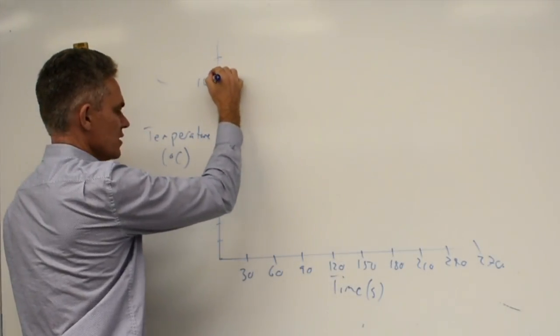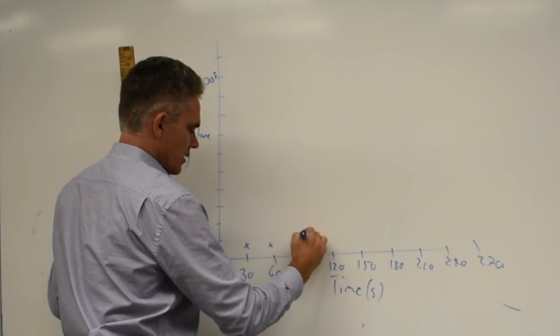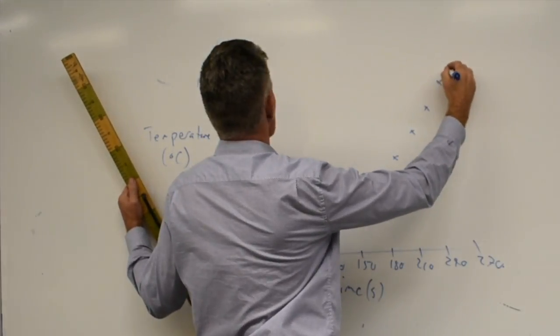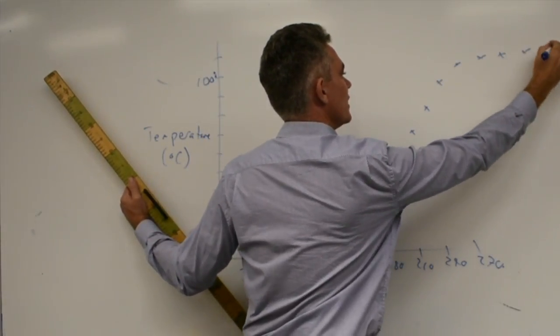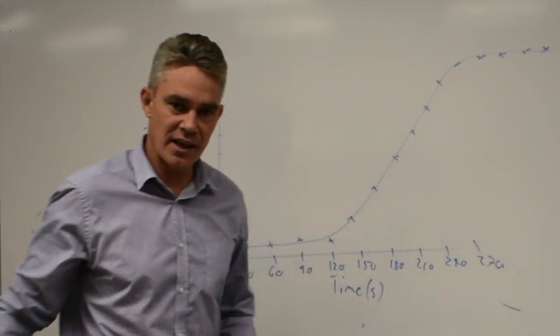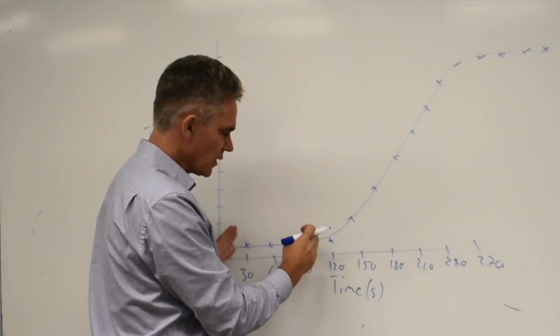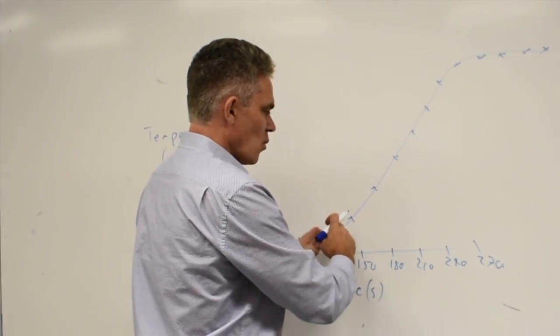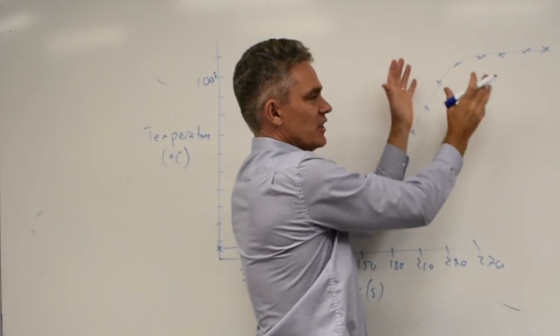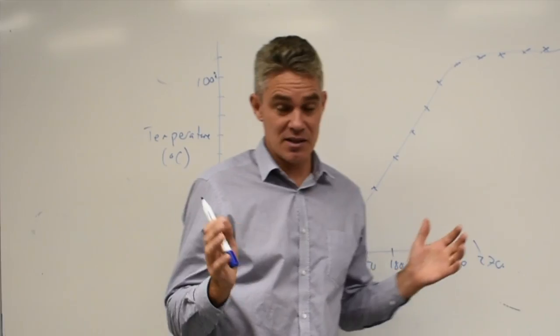And the students then plotted their points and basically they found that the graph went something like this. Got to 100 and then it leveled off. And they then drew the line of best fit, which looked much like that. I love to use crosses to mark my points. In this zone here, this is the zone where the ice is melting. And then once all the ice has melted, then the water starts heating up. When it gets to 100 degrees Celsius, then all the energy of the Bunsen burning is actually going into boiling the water. And so the water will then boil. Monday is year seven science.